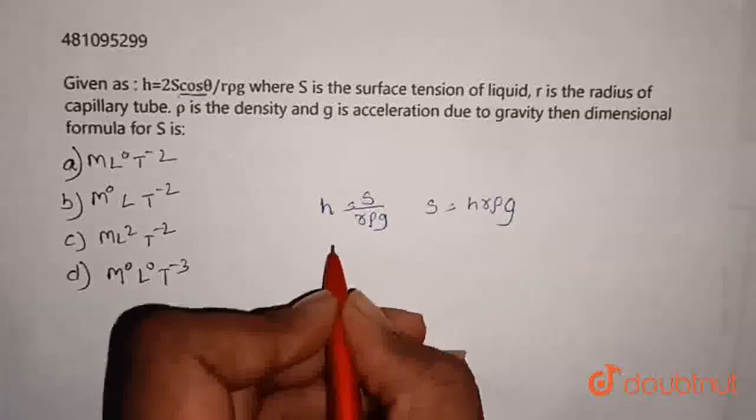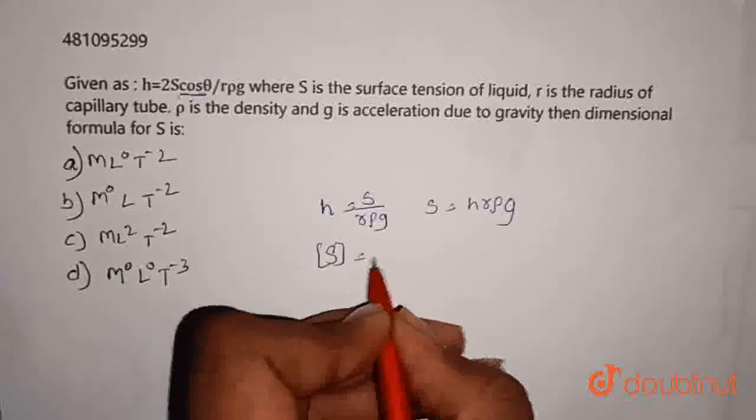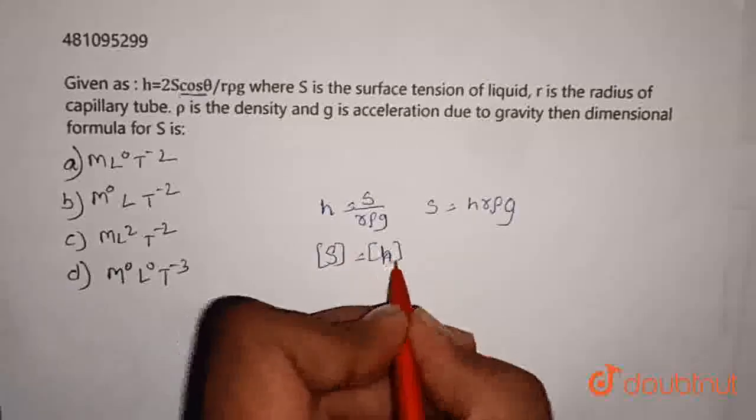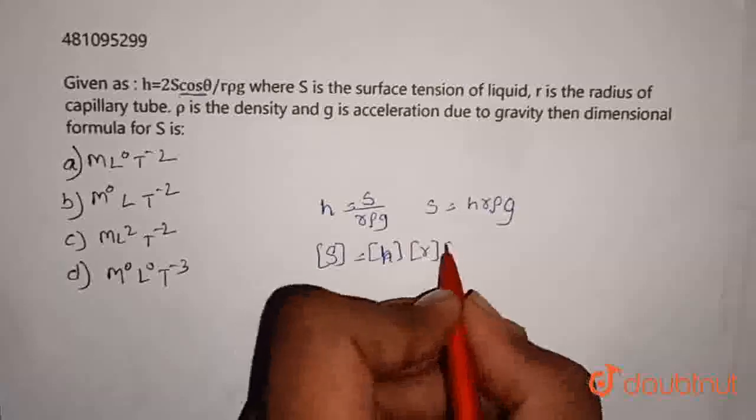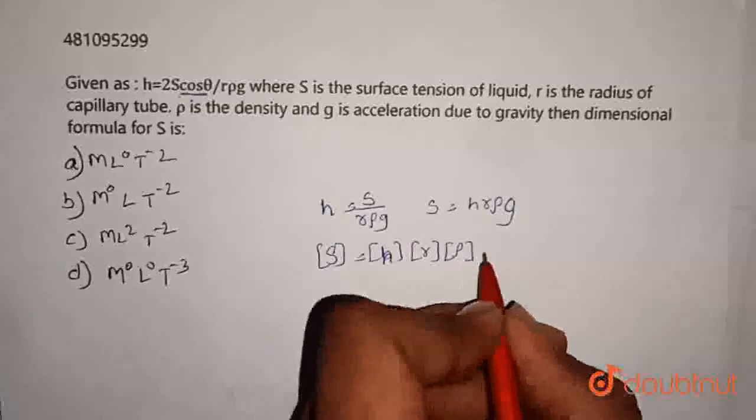Now let's write dimensionally. Dimensions of s equals dimensions of h times dimensions of r times dimensions of rho times dimensions of g.